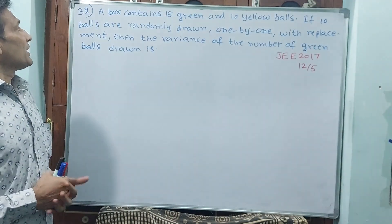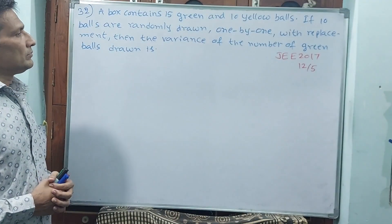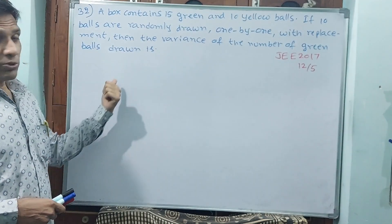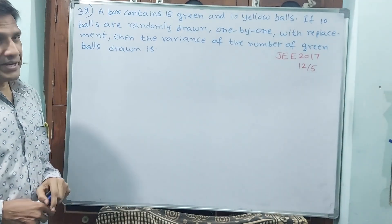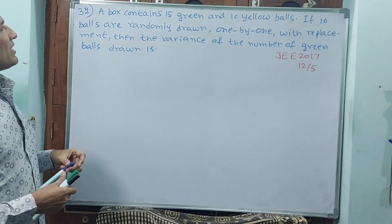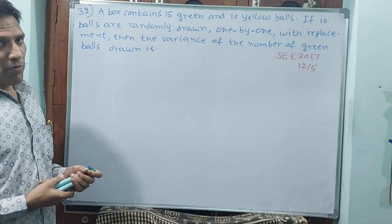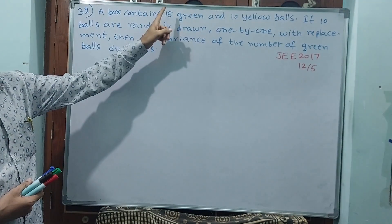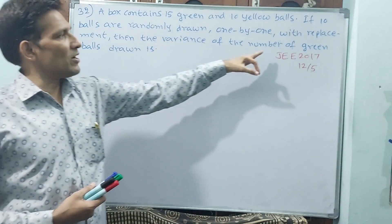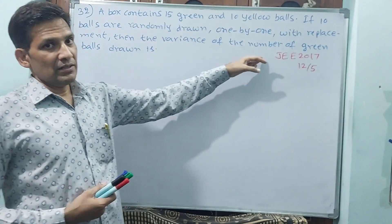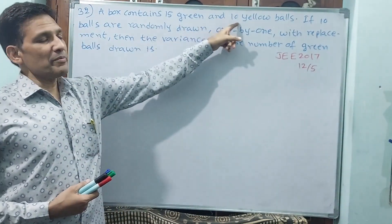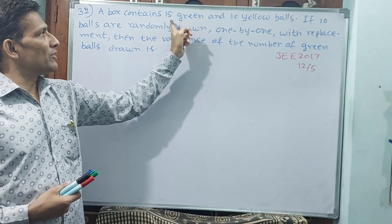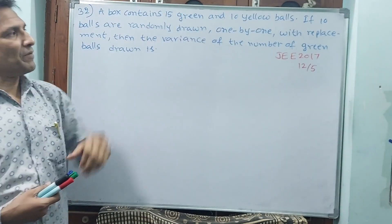Okay, see question number 32. This is a 2017 question — I think the earlier 3 questions were 2019. A box contains 15 green and 10 yellow balls, so total 25 balls are there. Green balls are 15. Remember, every time we are finally drawing green balls, so we need to know the total and the green balls. Total is 25 and green balls are 15.